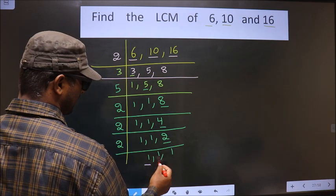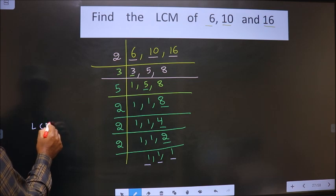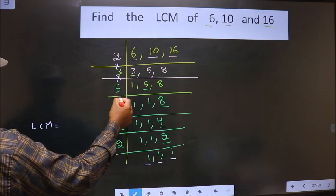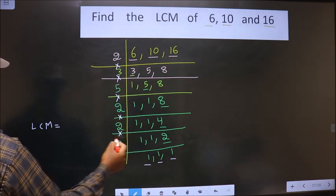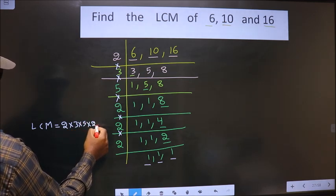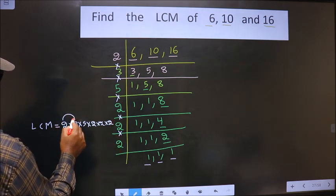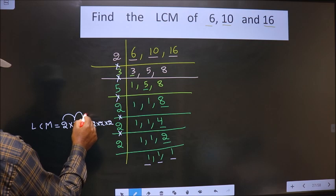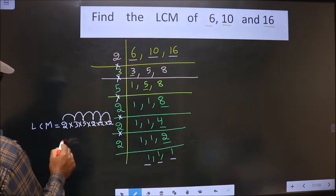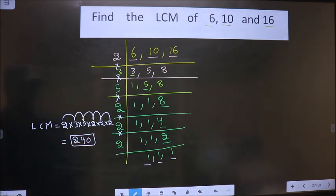So now we got 1 in all 3 places. Our LCM is the product of these numbers: 2 × 3 × 5 × 2 × 2 × 2 × 2. So 2 × 3 is 6, 6 × 5 is 30, 30 × 2 is 60, 60 × 2 is 120, 120 × 2 is 240. So this is our answer.